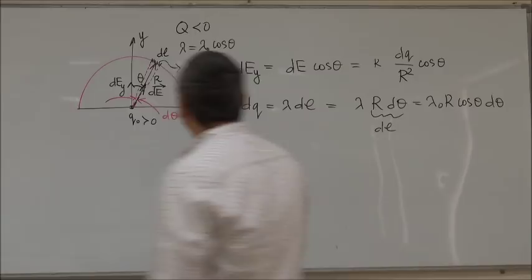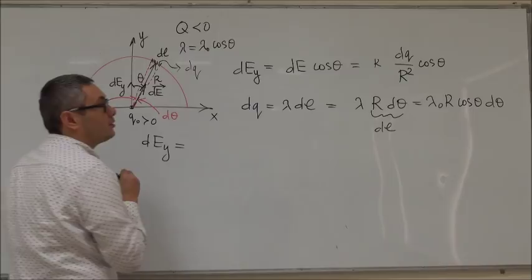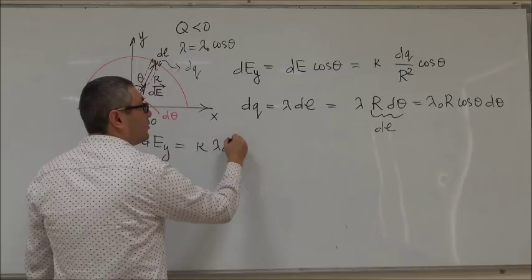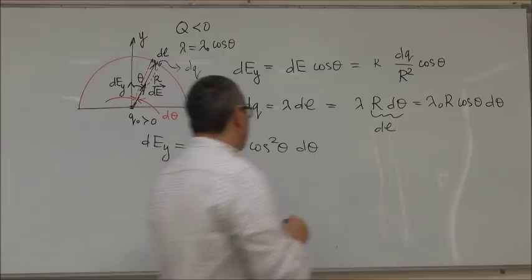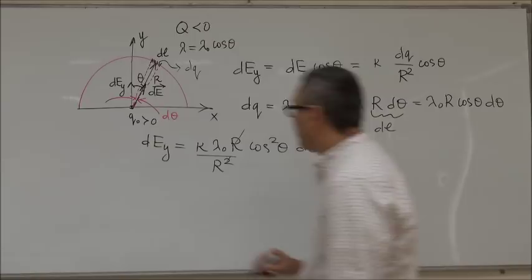And now we can get the final expression for DEY. So, DEY, therefore, is equal to K lambda 0 R cos square theta D theta over R squared. Well, R and the square will cancel out.